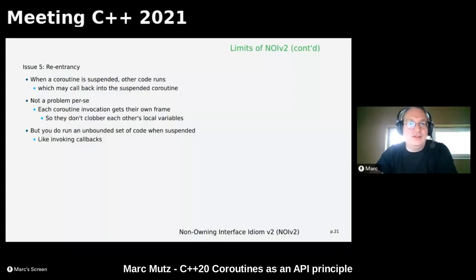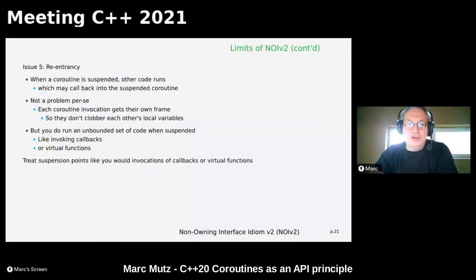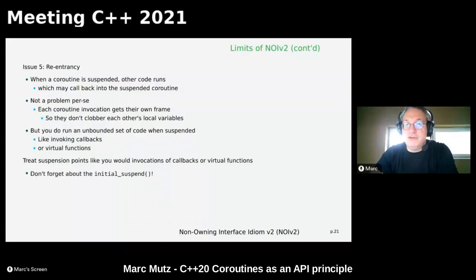Treat suspension points as you would invocations of callbacks or virtual functions — the same re-entrance rules apply. This is also similar to signal-slot connections in Qt, which are a fancy way of using callbacks. Don't forget the initial suspend, which is hidden in the code — there's no co_yield or co_await for it; as you enter the function it's immediately suspended if you're using a generator.